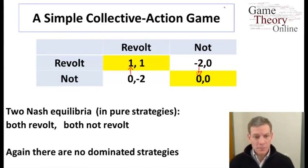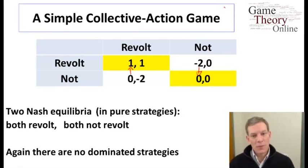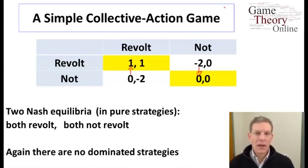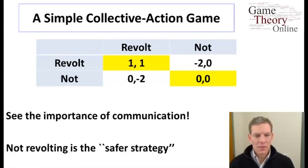Again, we have two Nash equilibria in pure strategies: both revolting if that's what they expect — neither one wants to change that — but if they both expect the other person not to show up, then they strictly choose not to show up. This is a game where coordination, communication, and other things are going to be important in making a revolt work. If you can't coordinate and be sure other people are going to show up, you don't want to show up yourself. Not revolting is a safer strategy — you get zero for sure — and there's a risk of revolting if you're not sure the other players are.